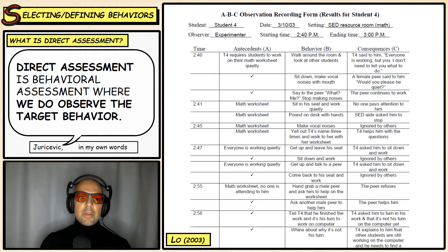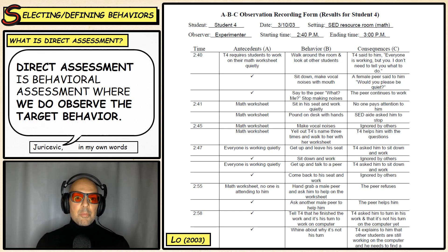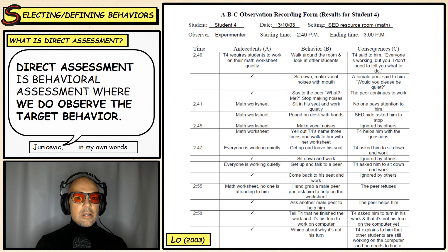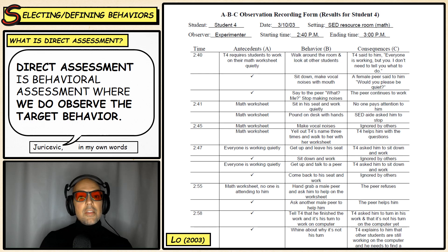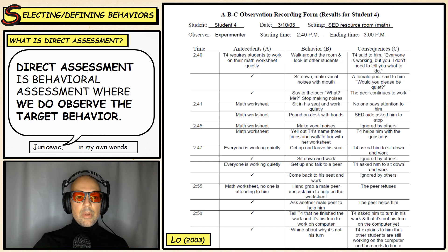One of those tools is the method of ABC observation, also known as anecdotal observation. ABC recording is where you record the antecedents, the behavior, and the consequences. For any target behavior, you record the antecedents — what happened before that triggered or caused the target behavior — then the behavior itself, and then the consequences — what happened to that behavior. At this stage, we're not attempting to change the behavior; we're just assessing it.